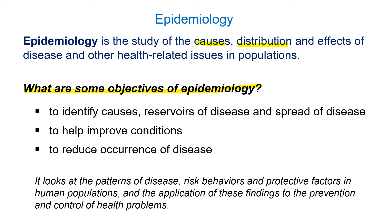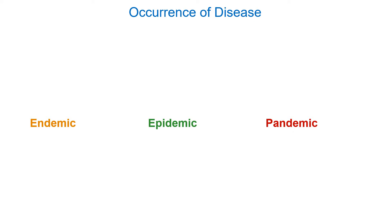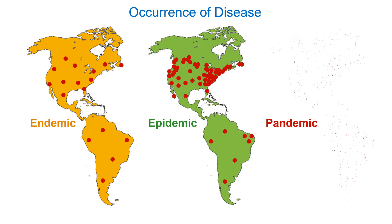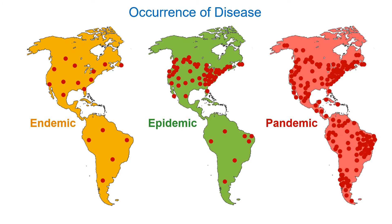Epidemiology looks at patterns and data, and it's a little bit like detective work in terms of trying to understand how diseases work. So: endemic, epidemic, pandemic — let's talk about these things. It all has to do with numbers and geography.